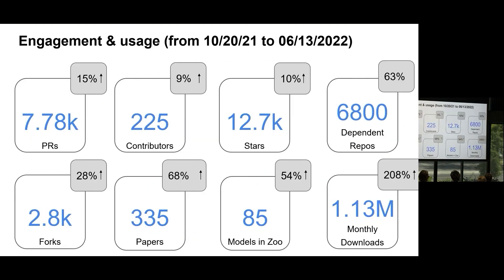Now I'll talk about some statistics on engagement and usage of ONNX over the last six months since the last community update. We see good metrics across the board: PRs up 15%, 10% more contributors, 10% more stars, 63% more dependent repos, 28% more forks, 68% more mentions in research papers, the number of models in the model zoo up 50%, and a very healthy increase in the number of monthly downloads. These stats are quite encouraging to see.